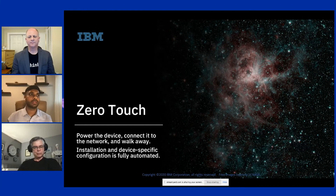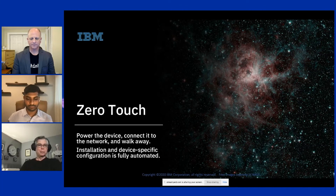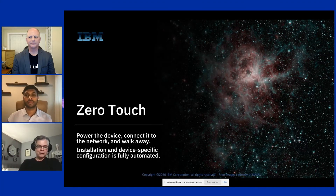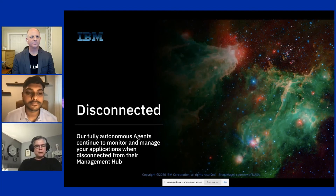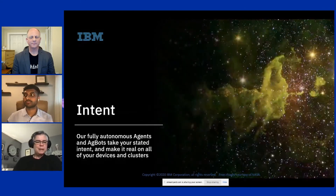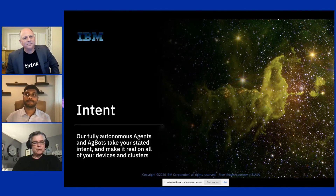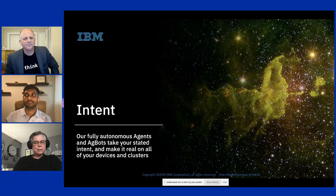Installation of IBM Edge Application Manager software and any device-specific configuration is fully automated on the device — truly zero touch. It saves customers a lot of money since an installer placing a device in the field doesn't need a separate person to configure it. Our agents can continue to monitor and manage your applications even when disconnected from the management hub. You determine what software runs by stating your intent using a mechanism we call policy, and then agents and agreement robots (ag bots) negotiate to make it real across all your devices and clusters.